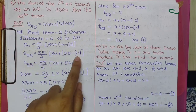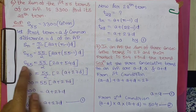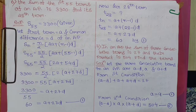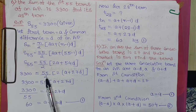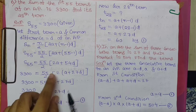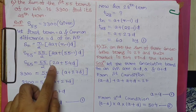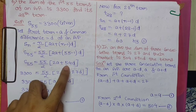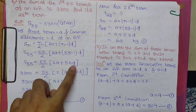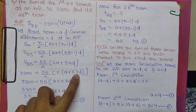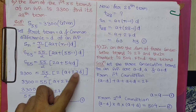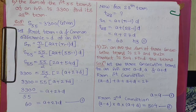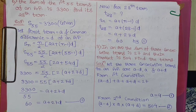Now 55 minus 1 is 54. At place of S55 write 3300: 3300 = 55/2 × (2A + 54D). Take 2 as common from the bracket — this gives A + 27D (since 27 × 2 = 54). This 2 in the bracket and the 2 in the denominator cancel.